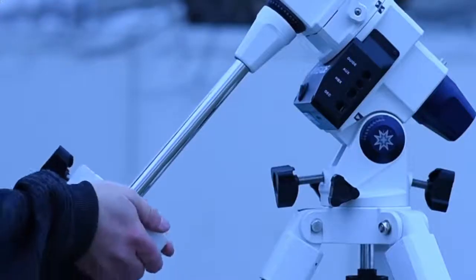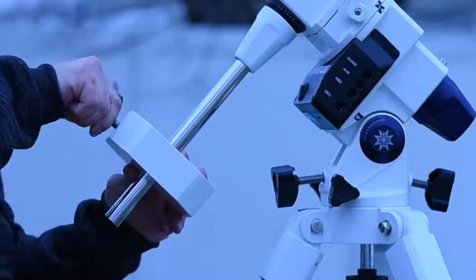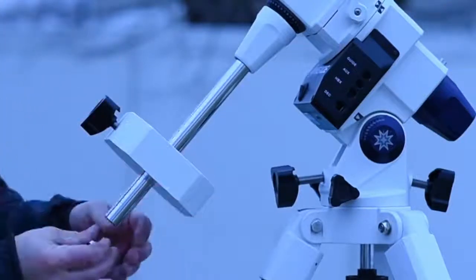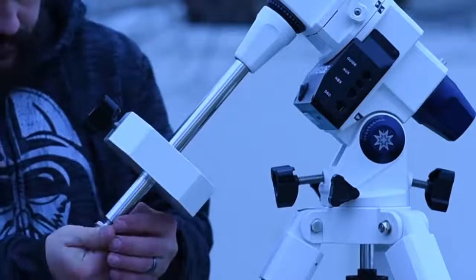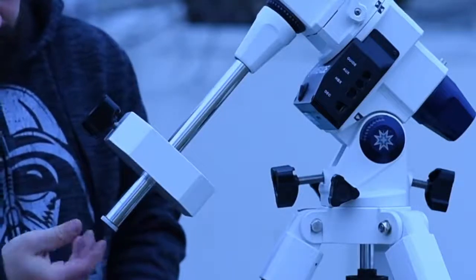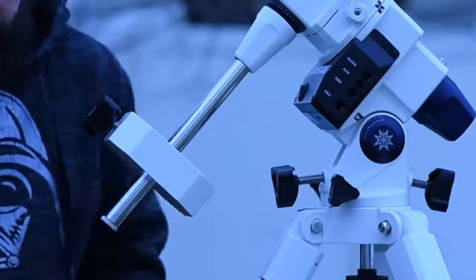Unlock the right ascension lock lever and position the counterweight shaft so that it's pointing downward towards the ground. Remove the safety nut and slide the counterweight to the middle position of the counterweight shaft and secure in place by using the locking screw. Re-thread the safety nut onto the counterweight shaft for protection. You will later adjust the position of the counterweight to balance the mount after the tube assembly and accessories have been added.